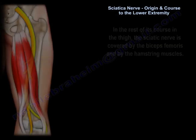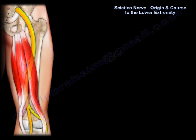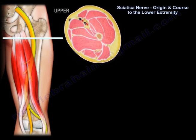In the rest of its course in the thigh, the sciatic nerve is covered by the biceps femoris and by the hamstring muscles, as you can see here in these cross sections.